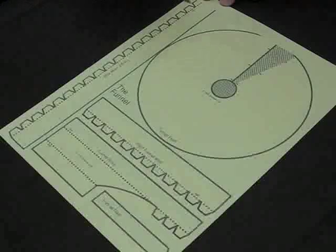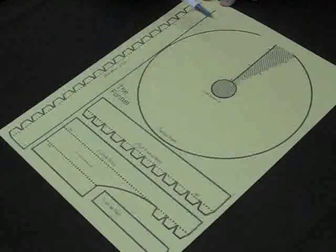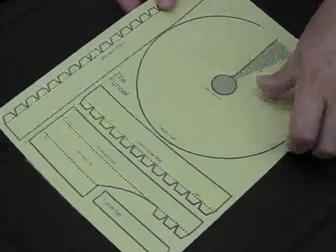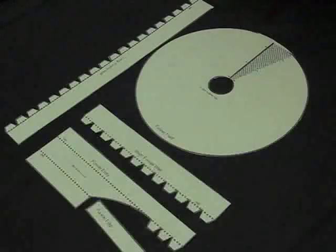To make the funnel, you get the funnel template sheet and this will make one funnel. You're going to cut out all the pieces along all the dark lines including the circle here and the line there. So you'll be left with these pieces here.